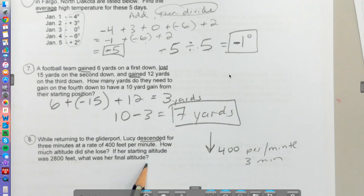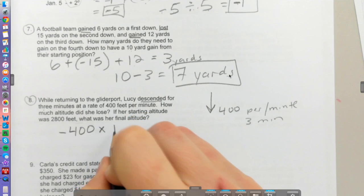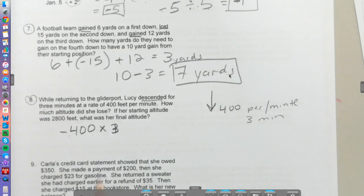Let's look at where she is now. If she descends, that's a negative number going down, 400 feet for three minutes. So 400 feet per minute for three minutes, she's going to have lost 1200 feet total.